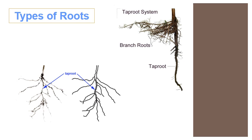Which type is seen in this figure? Can you tell us, Rehab? Yes — a tap root. It consists of one main large root with smaller side roots. Excellent! It has one main deep root with smaller side roots. This figure shows the tap root, with branch roots and the main tap root.